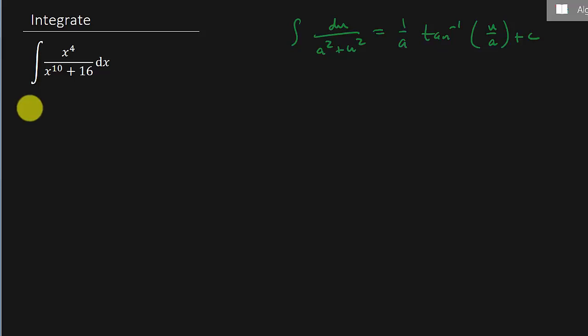Alright, so I think to do that, notice we've got the a squared. That would be the sixteen. That would be four squared. But let's see if we can get a u squared. Let's turn this into u squared.